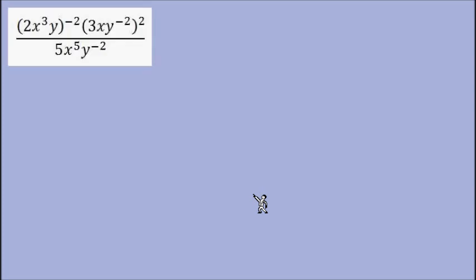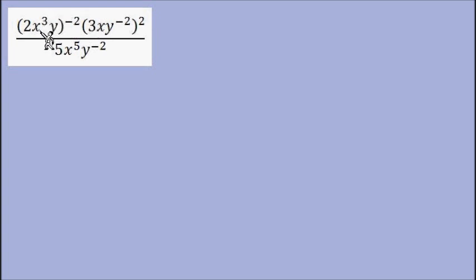Now let's look at some examples. To simplify this expression, I'm going to start with the exponents that are outside of the parentheses. Each of these exponents outside of parentheses needs to be worked into each exponent inside the parentheses. All of these factors do have exponents — if I don't see them, they are 1.